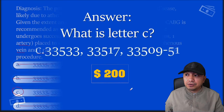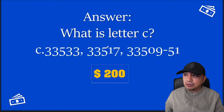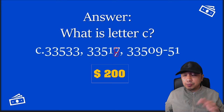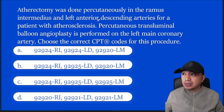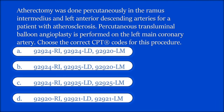Very easy for your first question. Congratulations! Let's now proceed to your next question. This is about PTCA. Atherectomy was done percutaneously in the ramus intermedius and left anterior descending artery for a patient who has atherosclerosis. Percutaneous transluminal balloon angioplasty is performed on the left main coronary artery. What are the codes for this scenario?